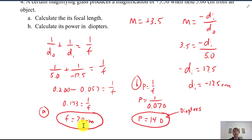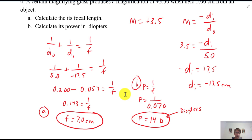Part B of problem four: find the power of the lens in diopters. Power P = 1/f, but we need focal length in meters. Converting: f = 7.0 cm = 0.07 m. So P = 1/0.07 ≈ 14 diopters. That's a very strong lens — reading glasses for older people typically start around 1 diopter and go up to 3 or 4 diopters, which is already a strong prescription. Opticians and ophthalmologists need to know these values. This concludes the physics of lenses; next we will do the physics of mirrors in Unit 25C.